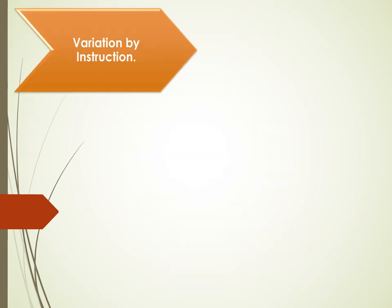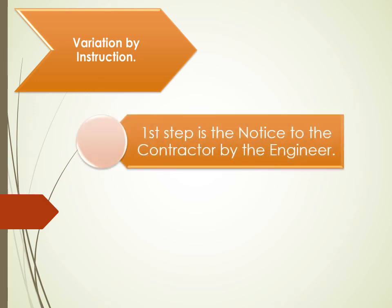Variation by Instruction. The first step is the Notice to the Contractor by the Engineer. In accordance with Subclause 3.5 Engineer's Instructions, the Engineer gives a notice that defines and describes the required changes and requirements for the recording of the costs.